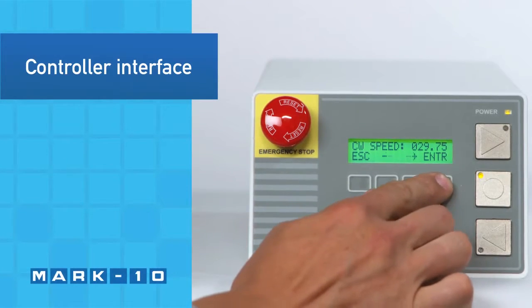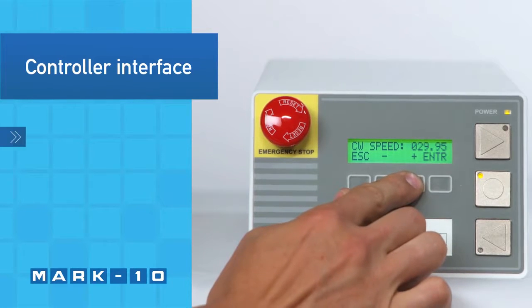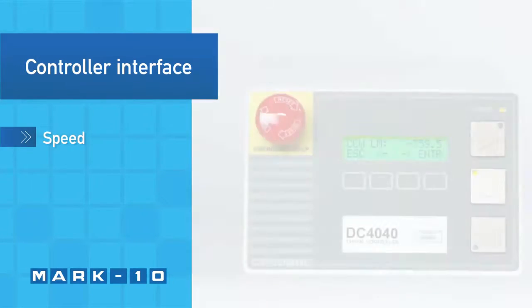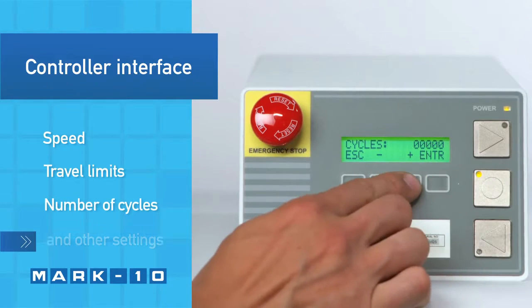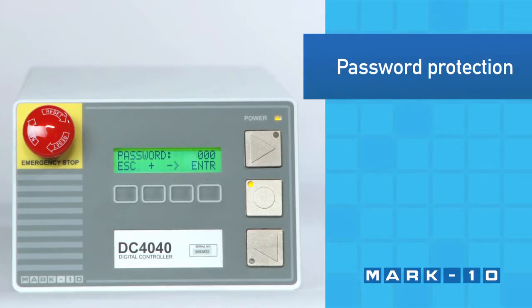Utilizing the simple controller interface, set up test parameters such as speed, angular travel limits, number of cycles, and other settings. Password protect the menu to prevent unauthorized changes.